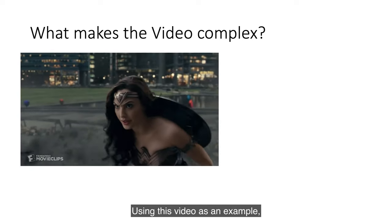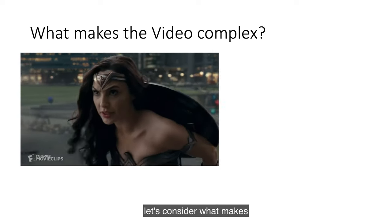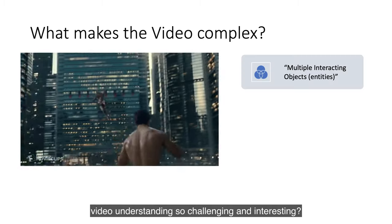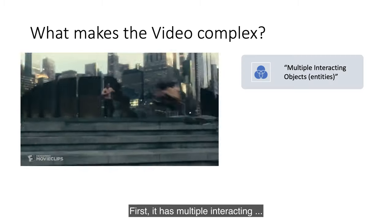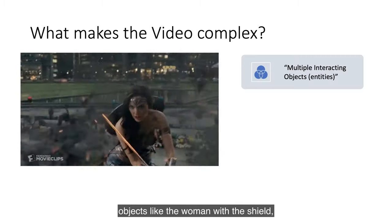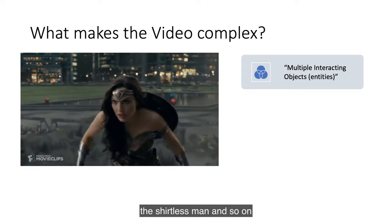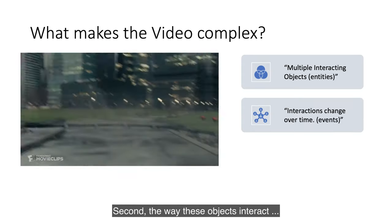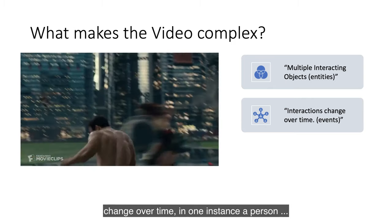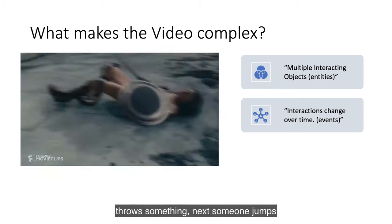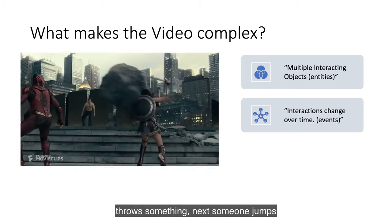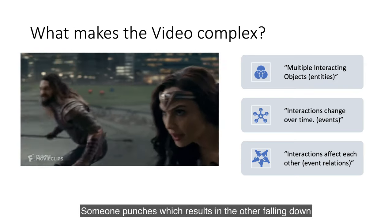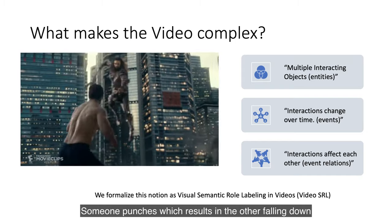Using this video as an example, let's consider what makes video understanding so challenging and interesting. First, it has multiple interacting objects, like the woman with the shield, the shirtless man, and so on. Second, the way these objects interact changes over time — in one instance a person throws something, and in the next someone is jumping. Third, these interactions affect each other: someone punches, which results in the other falling down.